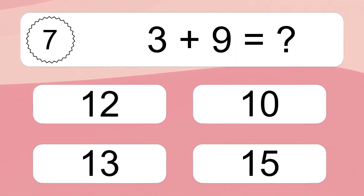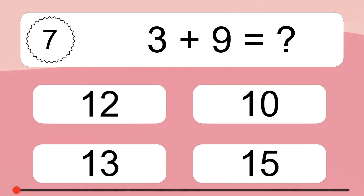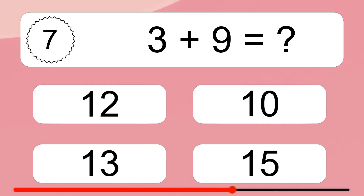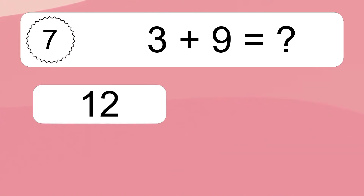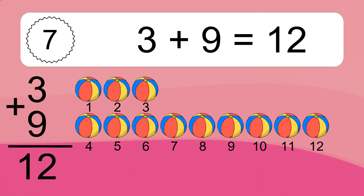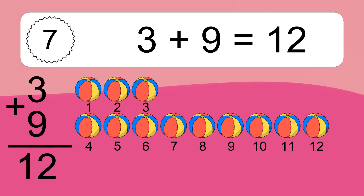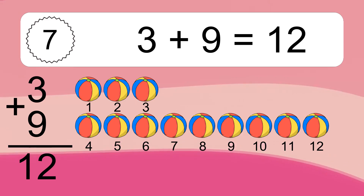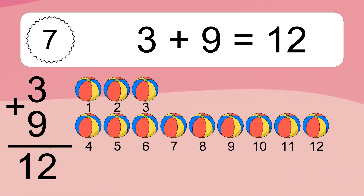3 plus 9 equals what? 3 plus 9 equals 12. Let's count it: 1, 2, 3, 4, 5, 6, 7, 8, 9, 10, 11, 12.